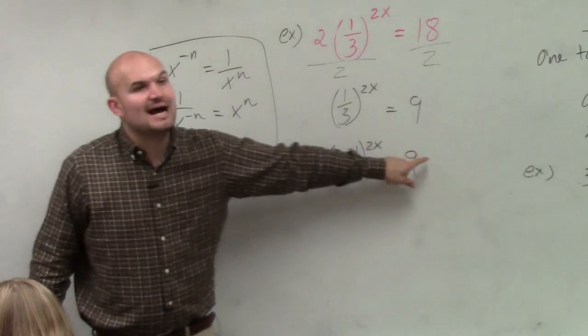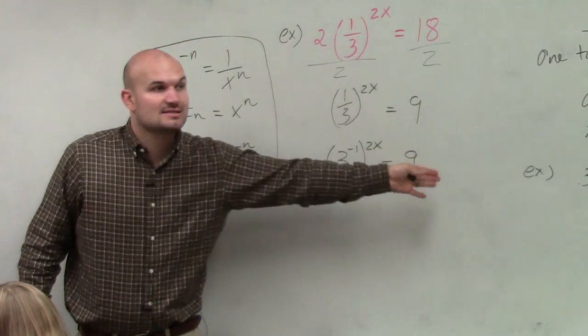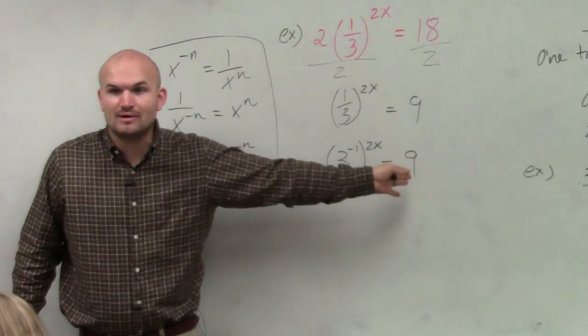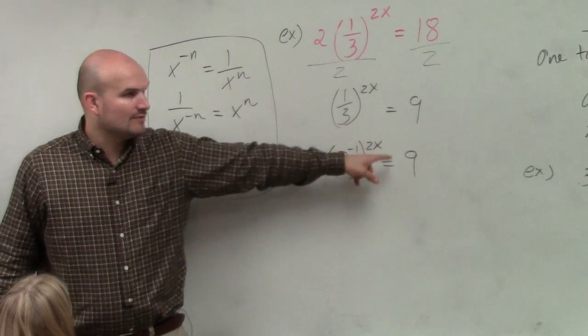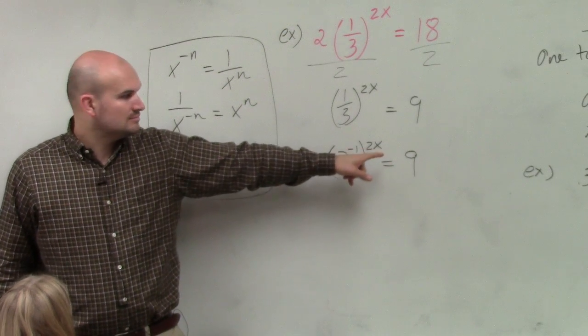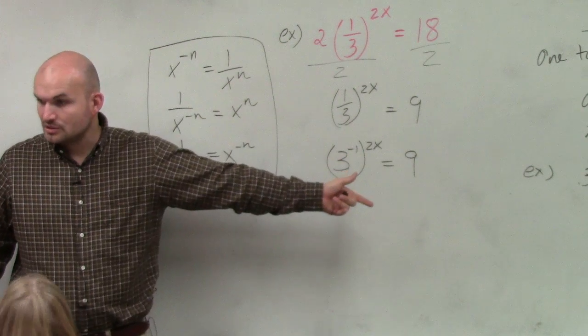Now I have 3 and 9. Can I rewrite these as having the same base? How could I rewrite 9 to have a base 3? 3 squared.